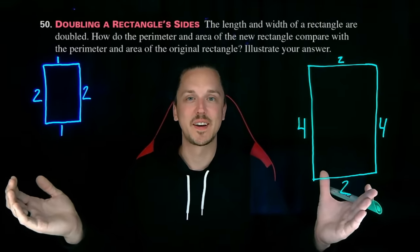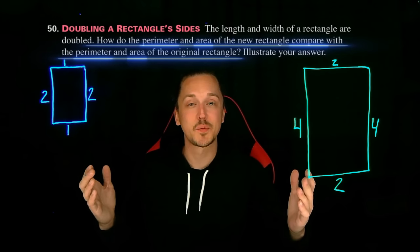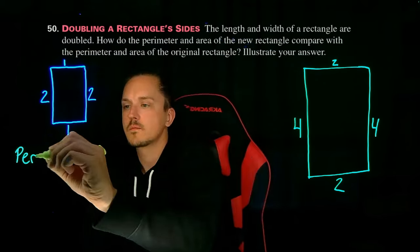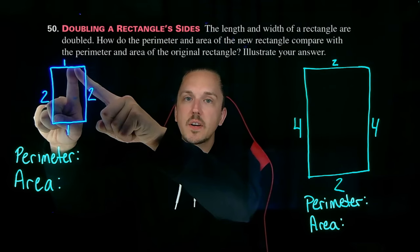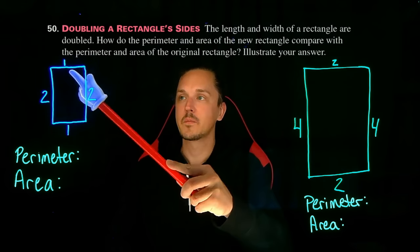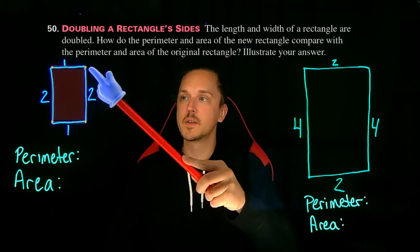Okay, we have a set of example rectangles here, and now we were tasked with comparing perimeters and areas. Let's take a note of them. Remember, perimeter is the length around the shape, and area is the square units in the interior.